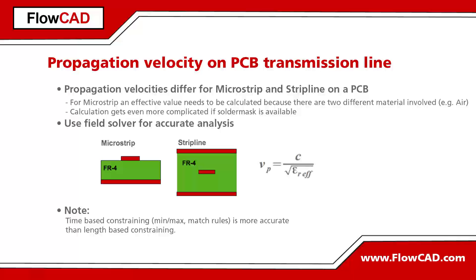For an accurate calculation of the propagation velocity, a field solver should be chosen. However, even without a field solver, we can at least state that the effective dielectric constant will be smaller compared to stripline, since air has a dielectric constant of 1, which decreases the total effective dielectric constant for microstrip. This means that the propagation velocity for microstrip is always higher compared to stripline.